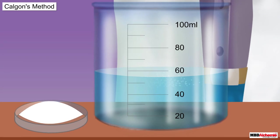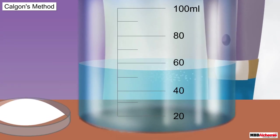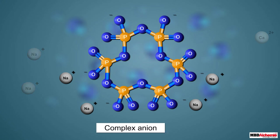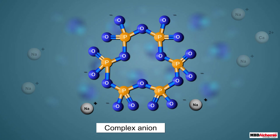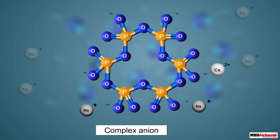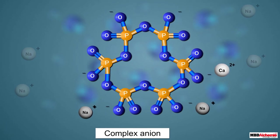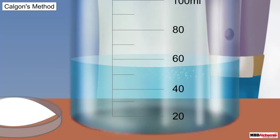Calgon's method uses Calgon — the commercial name for sodium hexametaphosphate — to remove permanent hardness. When Calgon is added to water, each of its molecules ionizes to give two sodium ions and one complex anion. The complex anion further loses two sodium ions and captures one calcium ion or one magnesium ion from the water, so the calcium or magnesium ion becomes part of the complex ion and no longer remains free.